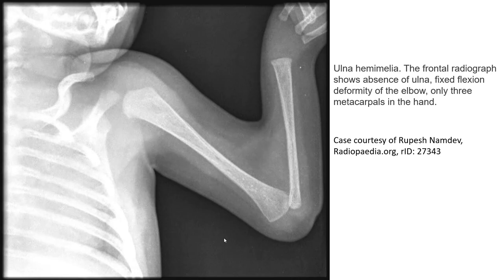This is an example of ulnar hemimelia on a frontal radiograph, showing absence of the ulna, fixed flexion deformity of the elbow, and only three metacarpals in the hand.